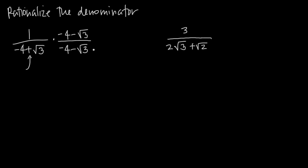The reason why multiplying by the conjugate is so useful is because when we FOIL out the denominator, we're going to get that middle term to cancel. Multiplying the numerators together, we do 1 times negative 4 minus root 3. This 1 doesn't have any effect, and so we still just get negative 4 minus root 3 in our numerator.